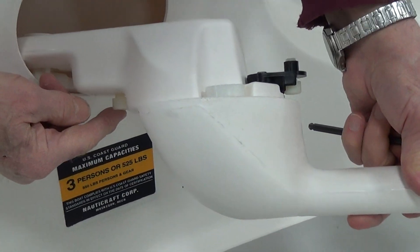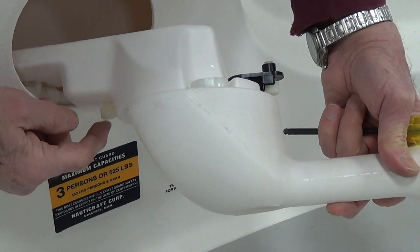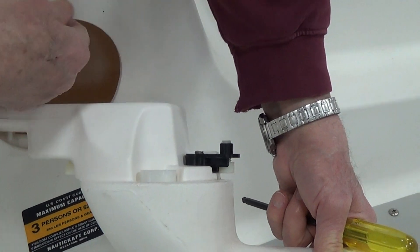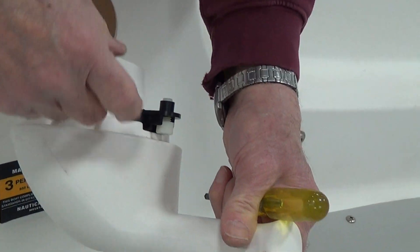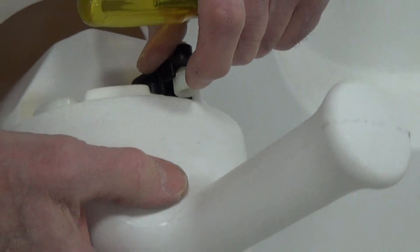This screw right here should not need adjusting at all. It's one that we adjust in and out, depending on the thickness of the wall of the boat here. And this screw right here does the same thing.